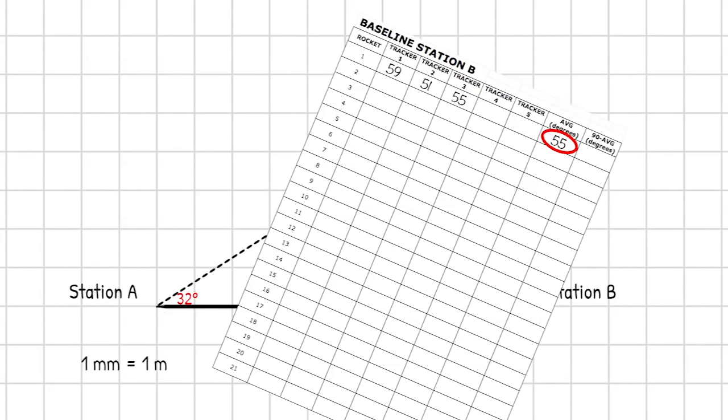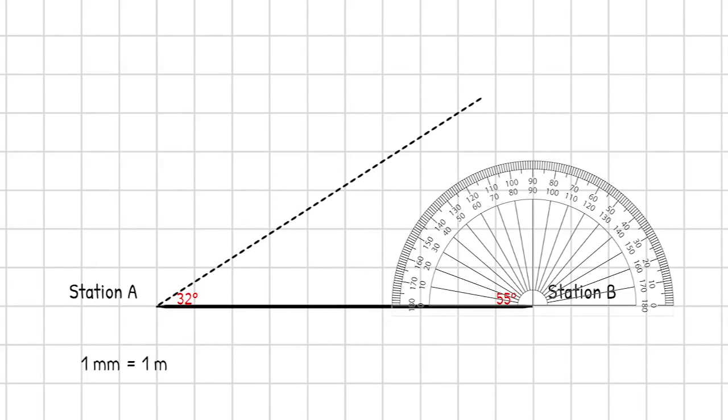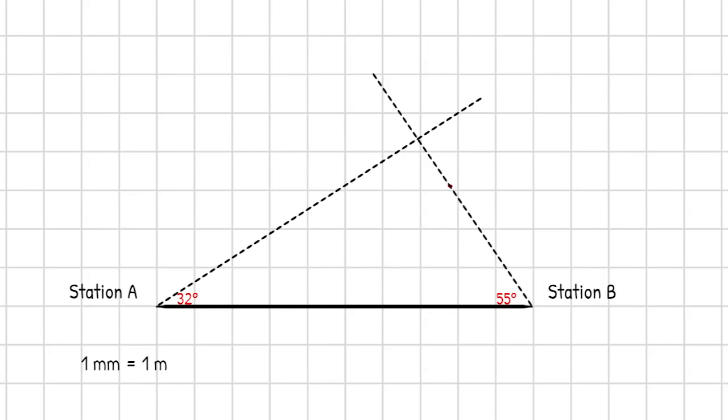Tracking station B, the average there was 55 degrees. So I construct from tracking station B a 55 degree angle and do the same thing. Extend the line from tracking station B. And this is where your rocket was.